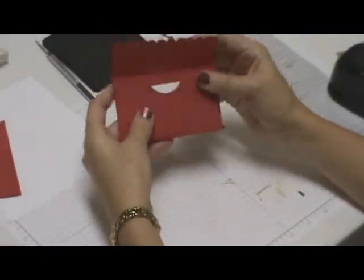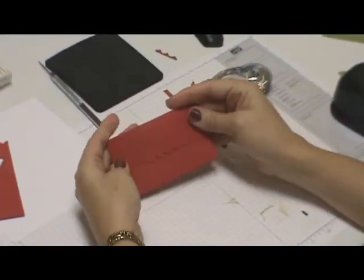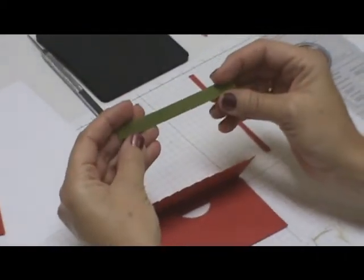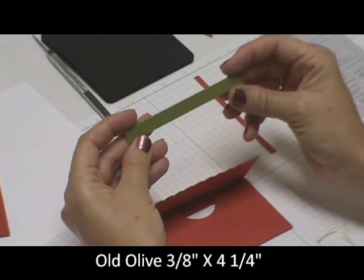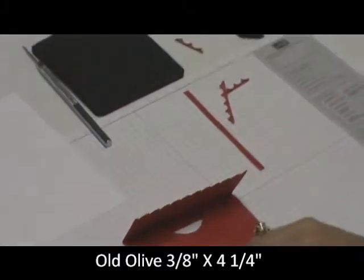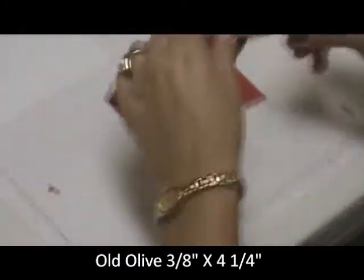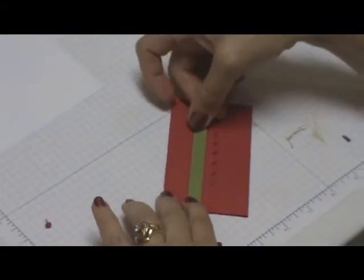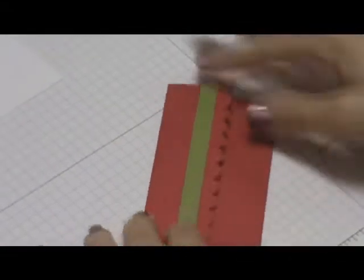So now I have my little note card to go with my gift card and we're going to decorate the front. I have a strip of old olive cut 3/8" by 4 1/4". I'm just going to line my adhesive down there and place this above the little scallop like so.